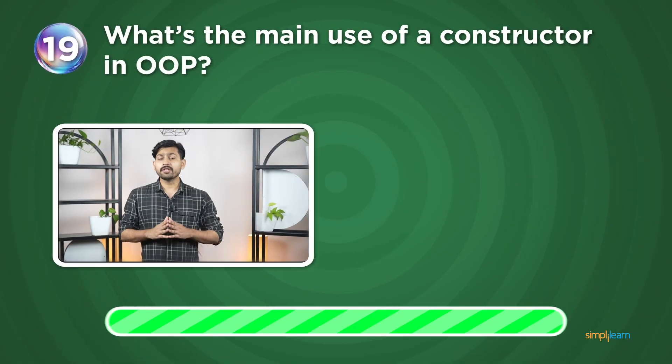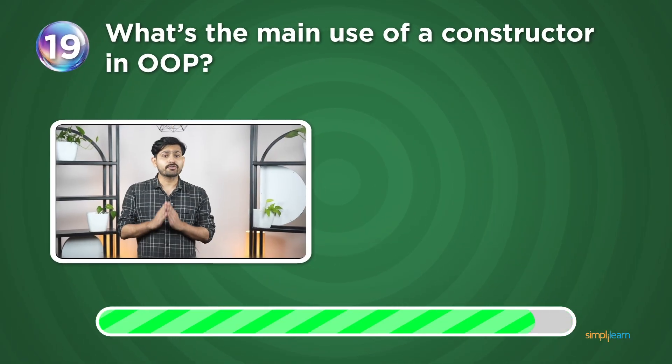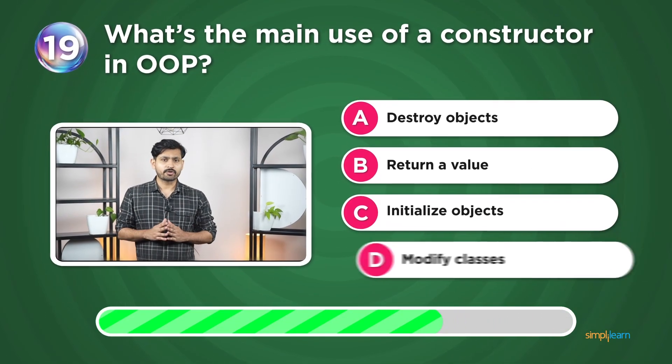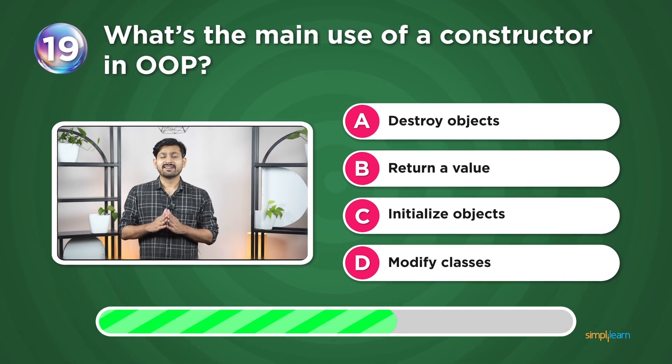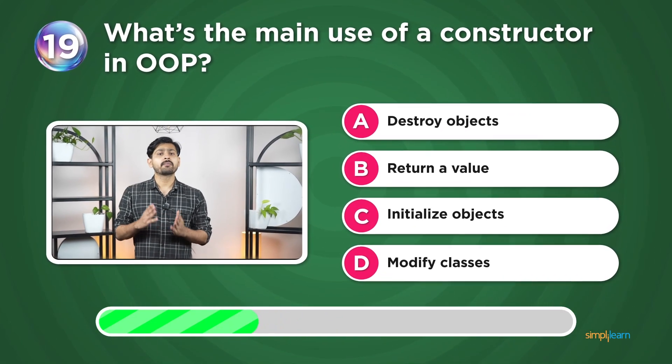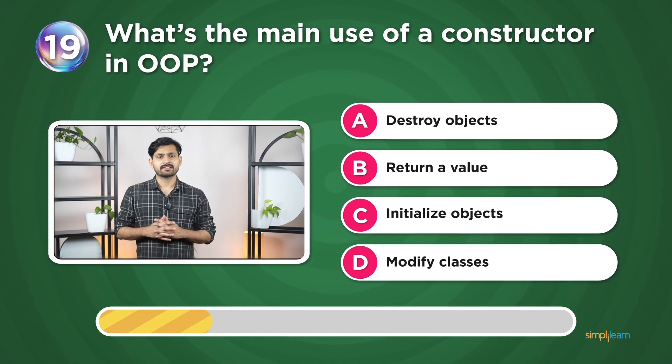Question 19: What is the main use of a constructor in OOP? Destroy objects, return a value, initialize objects, or modify classes?